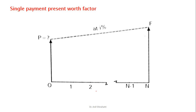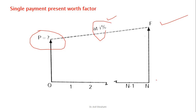Instead of future worth, if I want the present value — this is the situation where a person wants rupees 10 lakhs at the end of the 10th year for his daughter's marriage and wants to invest an amount now. I have an idea about the future amount, the rate of interest is known, and the number of years or period is known. I want to know what is its present value — that is called the single payment present worth factor.